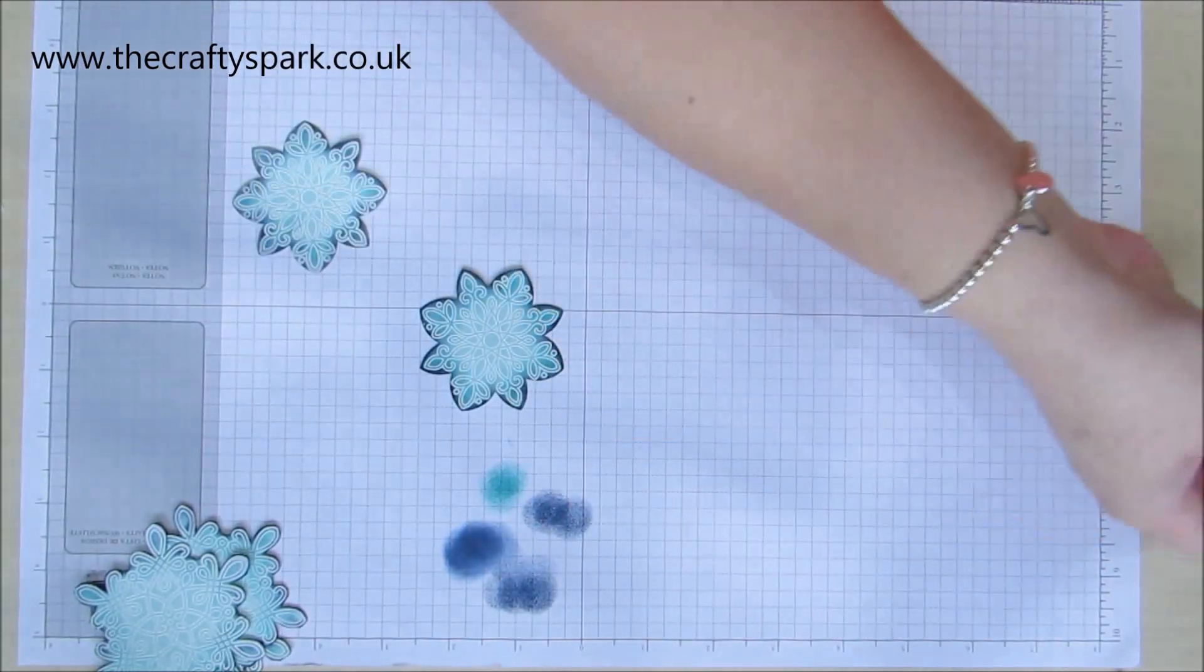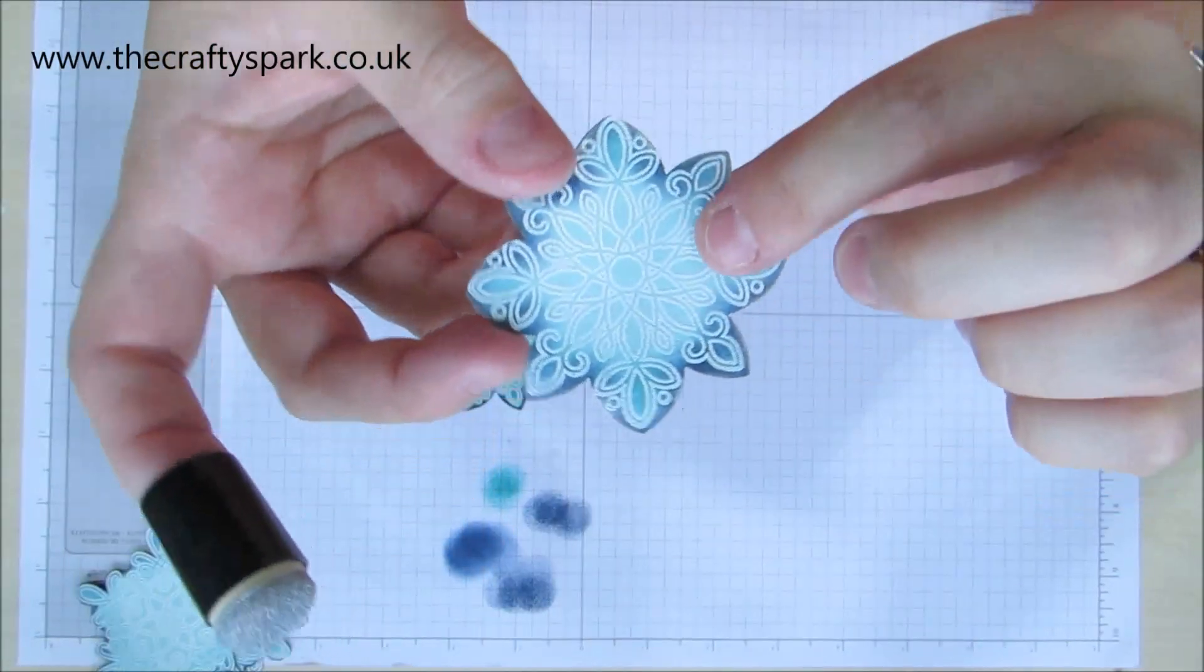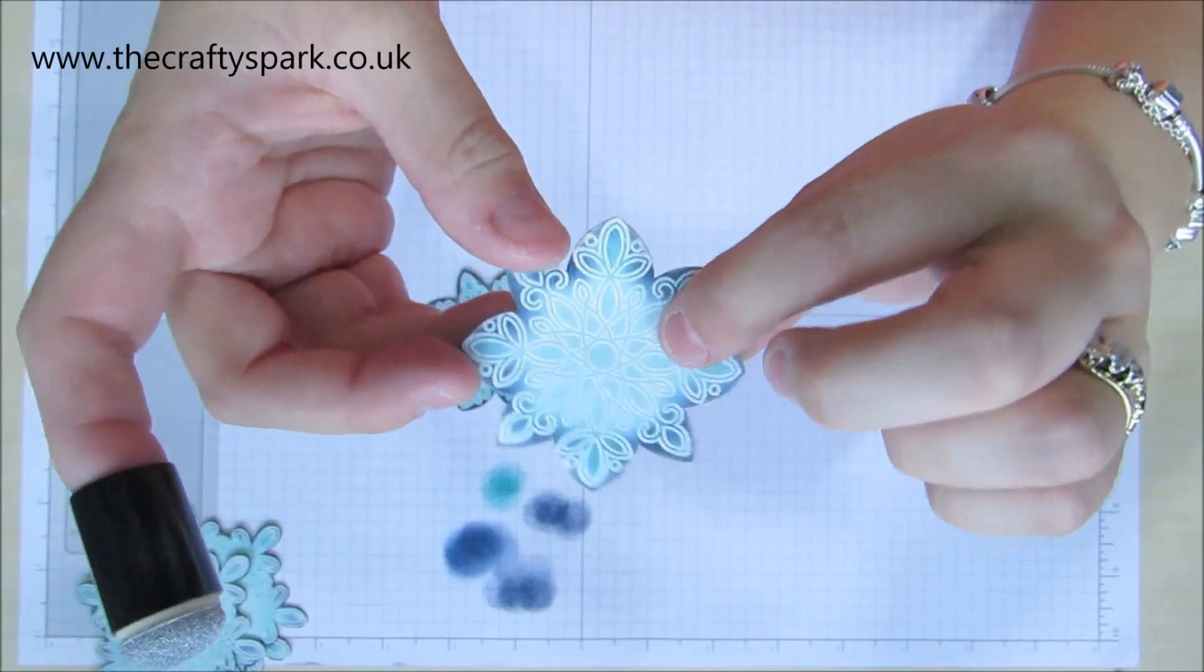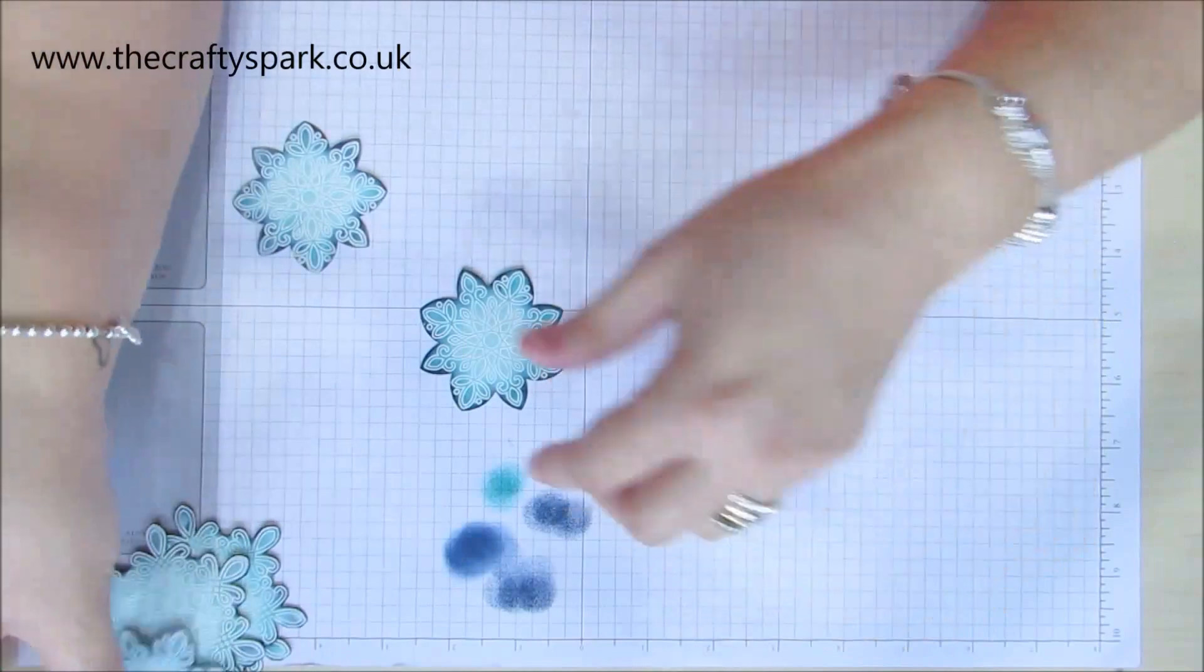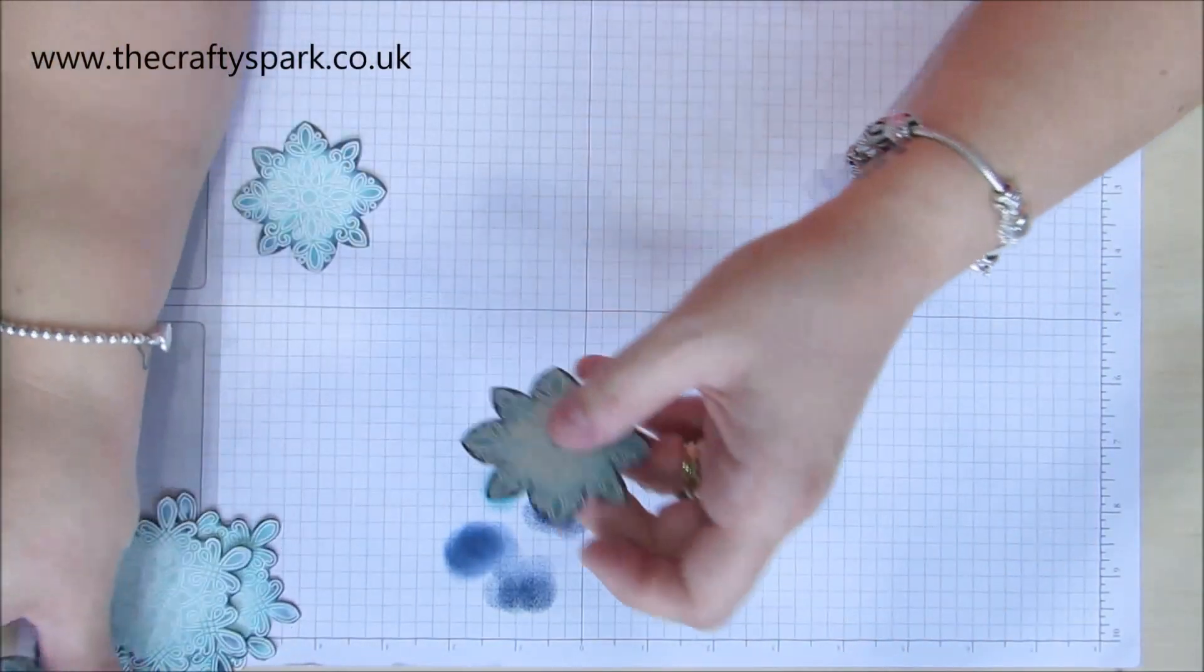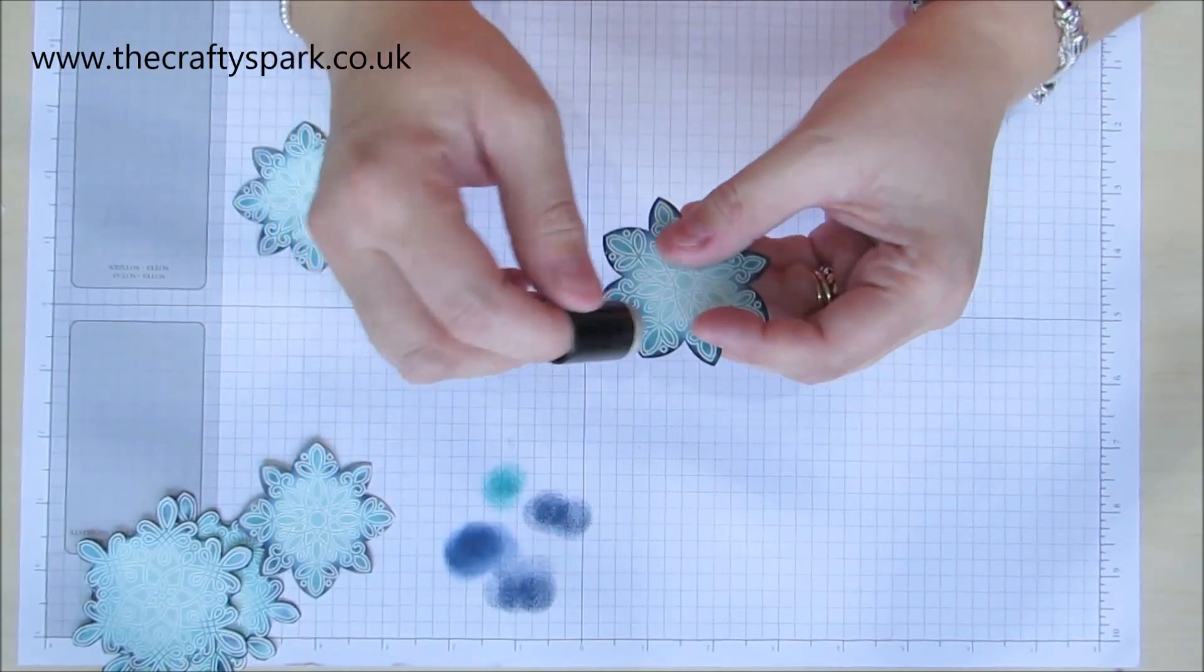Might sound like a lot of fussing, but when you've actually done it and you've finished it, it looks really nice. Now I've already got some silver ink left on here from yesterday. Can you see how it just softens it up?